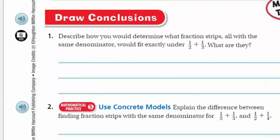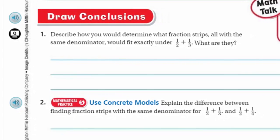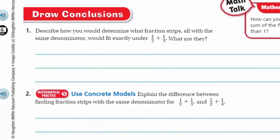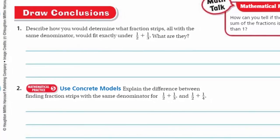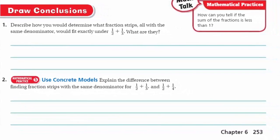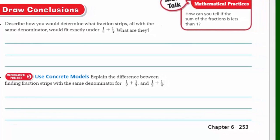Let's look at draw conclusions. This is to describe how you would determine what fraction strips, all with the same denominator, would fit exactly under one-half plus one-third. And what are they? Based on the question, I think what I would do is I would first, I can see that one-half plus one-third does not have the same denominator. So I would then, maybe I would try fourths if I was going to. I would try to do the largest fraction strips that I have, and the fourths would be the next in line. And since four, when you think of fourths and you think of thirds, well, so I think maybe next I would look at fourths, and if fourths doesn't fit, then I would go into fifths, and then sixths.